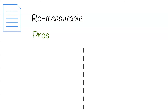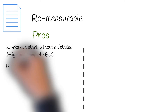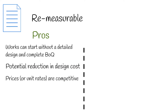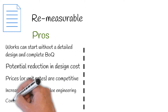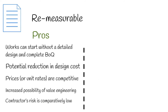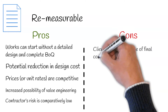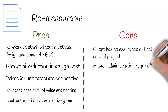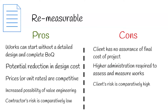Pros to this contract include: works can start without a detailed design and complete bill of quantities, potential reduction in design cost, prices or unit rates are competitive, increased possibility of value engineering, and contractor's risk is comparatively low. Cons to this contract include: client has no assurance of final cost of project, higher administration is required to assess and measure works, and client's risk is comparatively high.